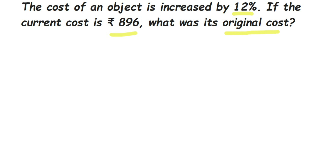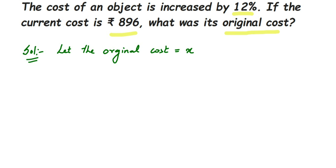Since we don't know the original cost, let us assume it as x. So let the original cost be equal to x. Now, the cost of the object is increased by 12 percent, which means we have the original cost x, plus 12 percent of x added to it. After adding this increase to the price, we get 896. I hope this is clear.